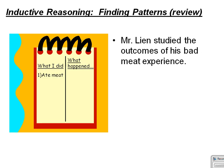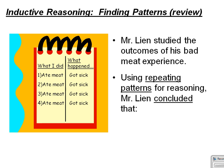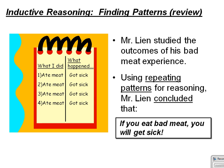Recollect that Mr. Lien was studying the outcome of his bad meat experience, where every time he ate meat, he got sick. Using repeating patterns for reasoning, Mr. Lien came to the conclusion that if you eat bad meat, you will get sick. This was a process of inductive reasoning, where a set of data was organized, a pattern was observed, and then a conclusion was reached based on that pattern.